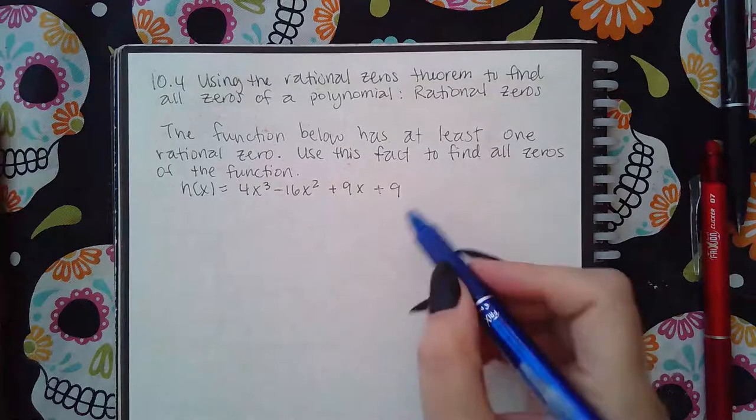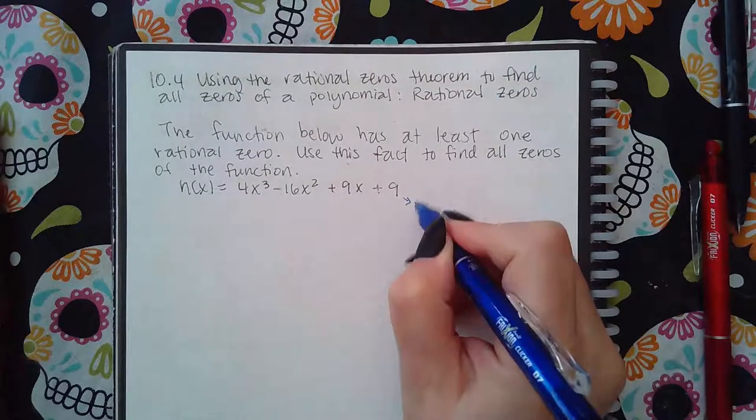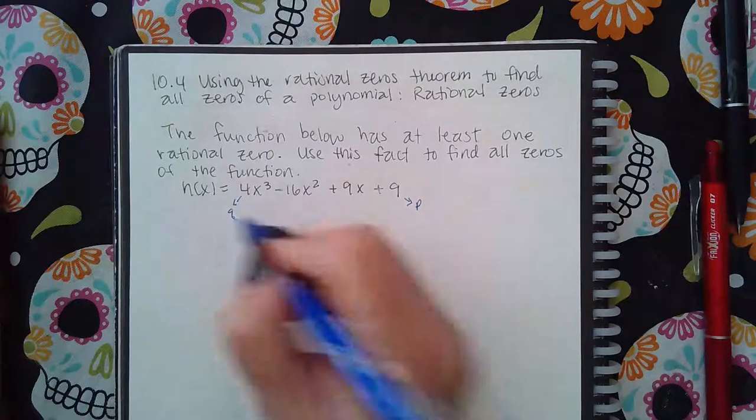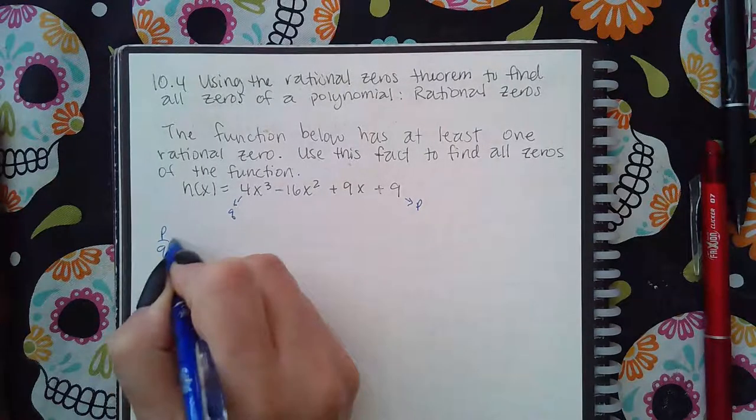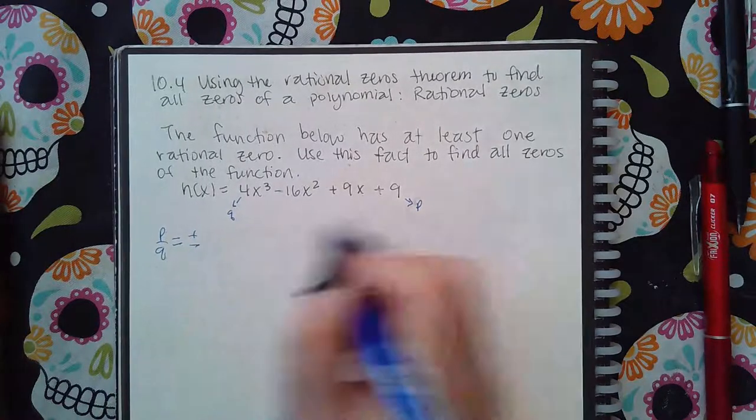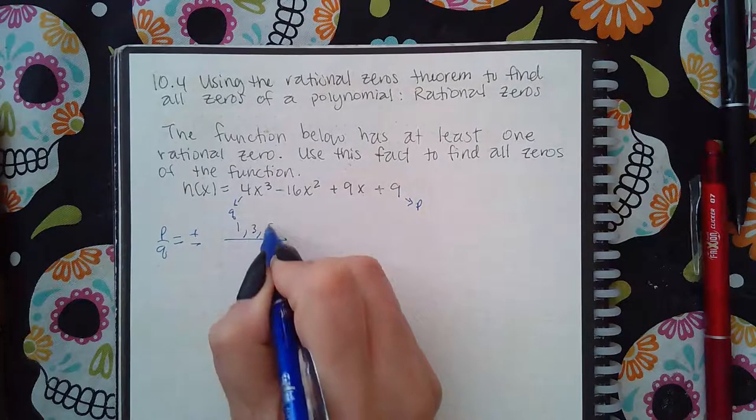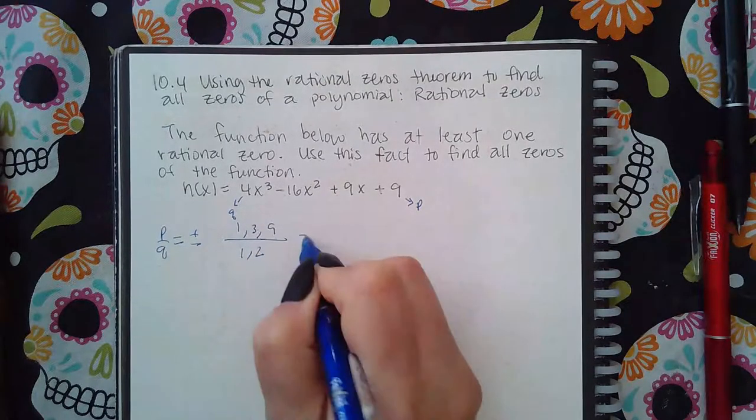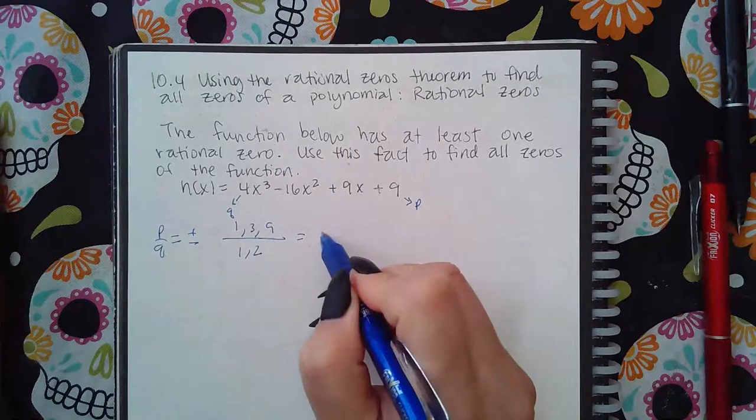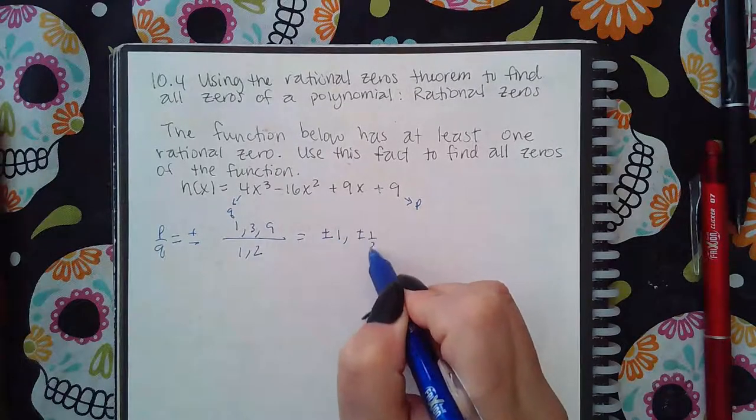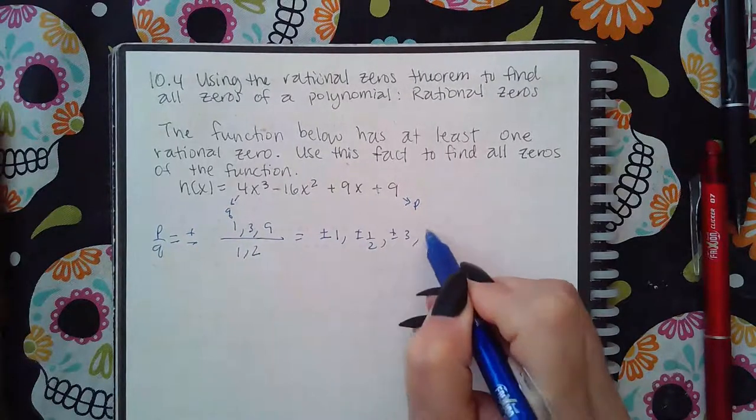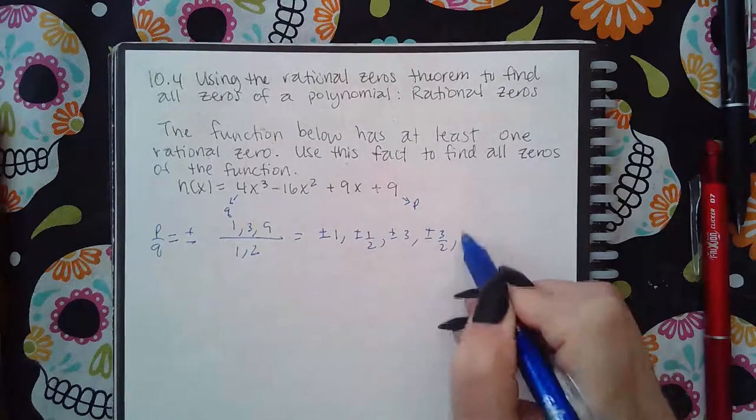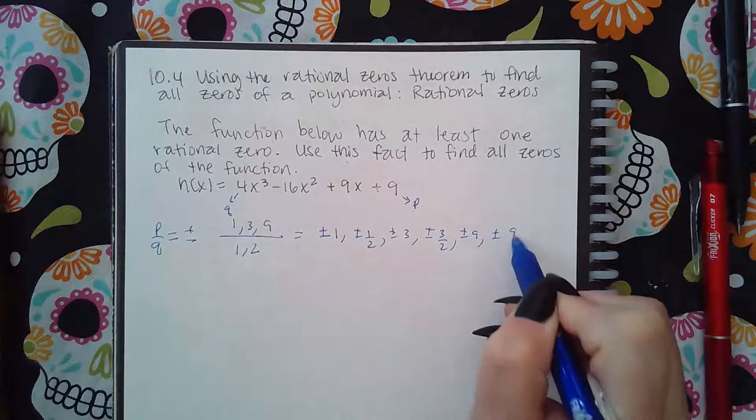This is in descending order. So this is where I'm going to get my P's from. This is where I'm going to get my Q's from. So P over Q becomes plus or minus 1, 3, and 9, and 1 and 2. So then I get possibilities of 1, 1 half, 3, 3 halves, 9, and 9 halves.